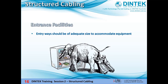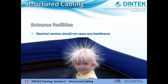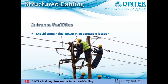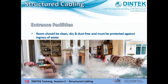The entryways should be of adequate size to accommodate equipment — more something to be considered at the design stage. There should always be consultation with the phone carrier and whoever's installing the backbone cabling to make sure we know what needs to fit in there and how we future-proof ourselves, for example, throwing in an extra conduit with a drawstring while we've still got an open trench. Electrical services should not cause any interference — the last thing we need is buzzing phone lines or unreliable data links. There should be a dual power outlet in an accessible location. And the room should be clean, dry, dust-free and protected against water ingress.